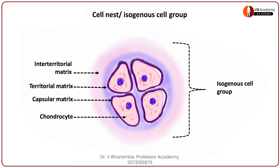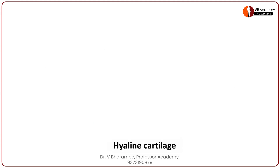There you have the diagram with its labels. Remember, this isogenous cell group or cell nest is the basis of our next part of our learning. Knowing how to draw this is very, very essential for you. The cartilage we are drawing now is our hyaline cartilage.